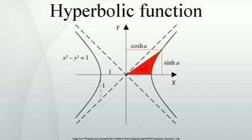The basic hyperbolic functions are the hyperbolic sine (sinh), and the hyperbolic cosine (cosh), from which are derived the hyperbolic tangent (tanh).